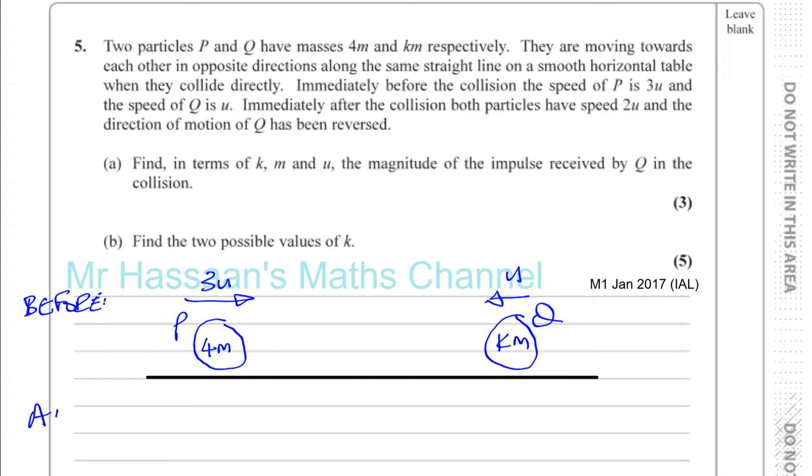After the collision, both particles have a speed of 2U and the direction of motion of Q has been reversed, so Q has reversed its direction and has a speed of 2U. P, well, we don't know what's happened to it. It's either gone this way or it's gone that way, but its speed is 2U.